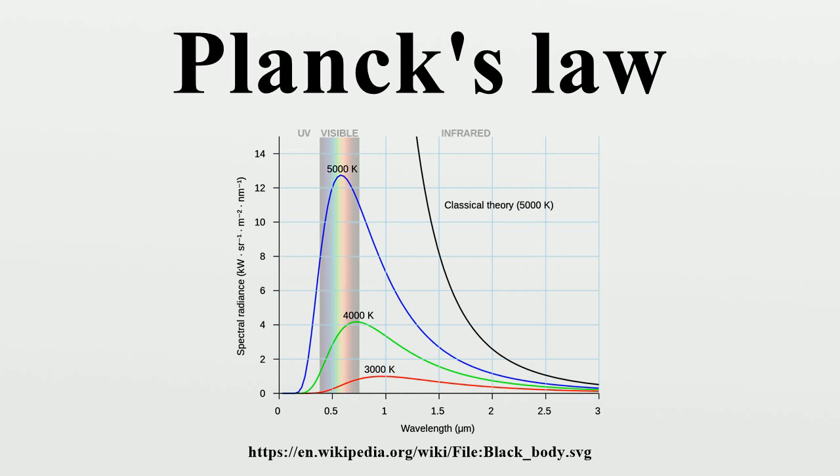At even higher temperatures, a body is dazzlingly bright yellow or blue-white and emits significant amounts of short wavelength radiation, including ultraviolet and even X-rays. The surface of the sun emits large amounts of both infrared and ultraviolet radiation. Its emission is peaked in the visible spectrum.